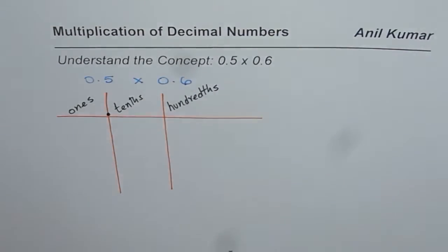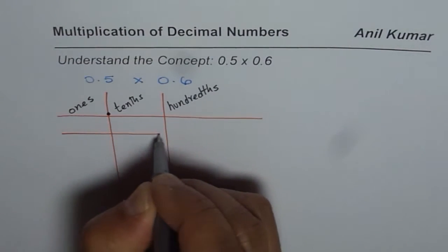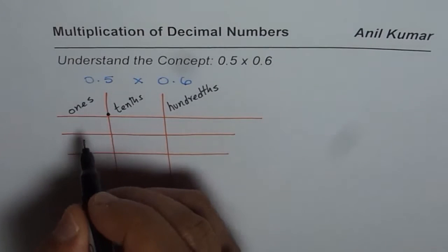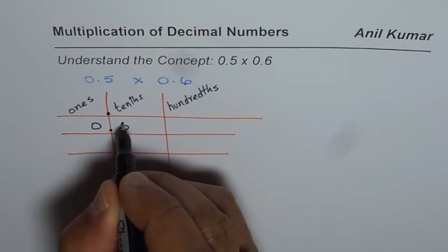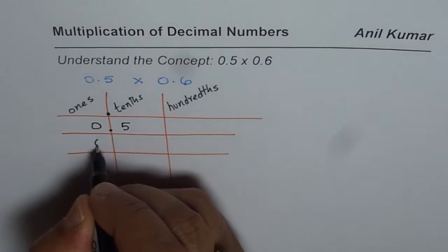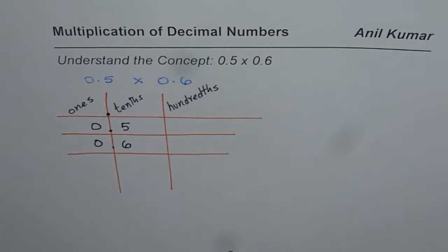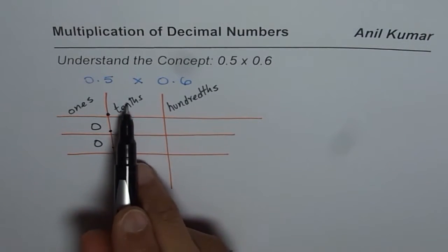So if I have to write 0.5 how will I write? 0.5, 0 ones, 0 ones decimal and in tenths position we get 5. So that is 0.5. How about 0.6? It is 0.6. If we have to write it in expanded form how do we write? It is 5 tenths.